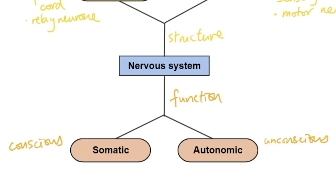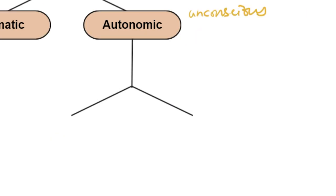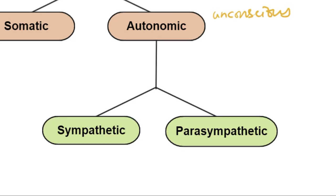Within the autonomic nervous system, we can further classify them into two different types as well, which is sympathetic and parasympathetic.